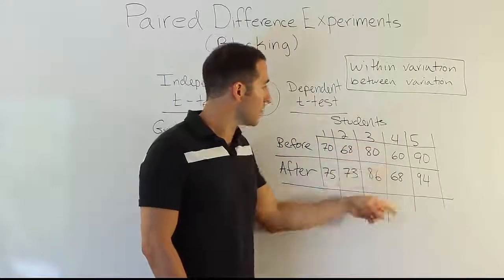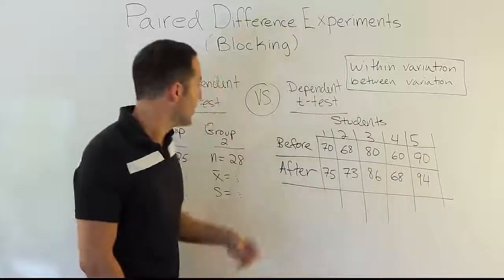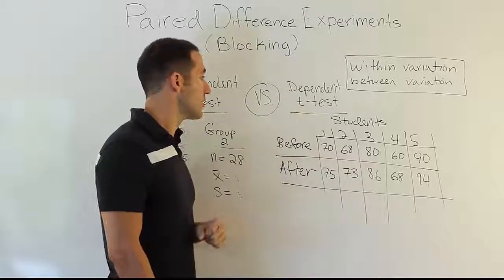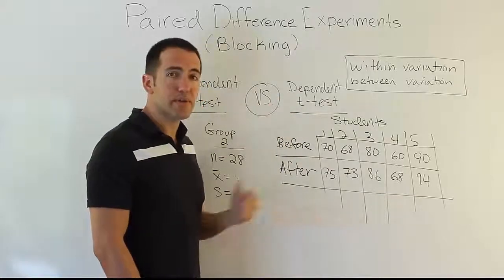In this case, the joining piece is that it's all from the same student. And that's true for each pair of numbers. They have the dependency that the same person is taking the test. Okay. So that's where the dependent part comes in. The other issue that brings up, then, is this.